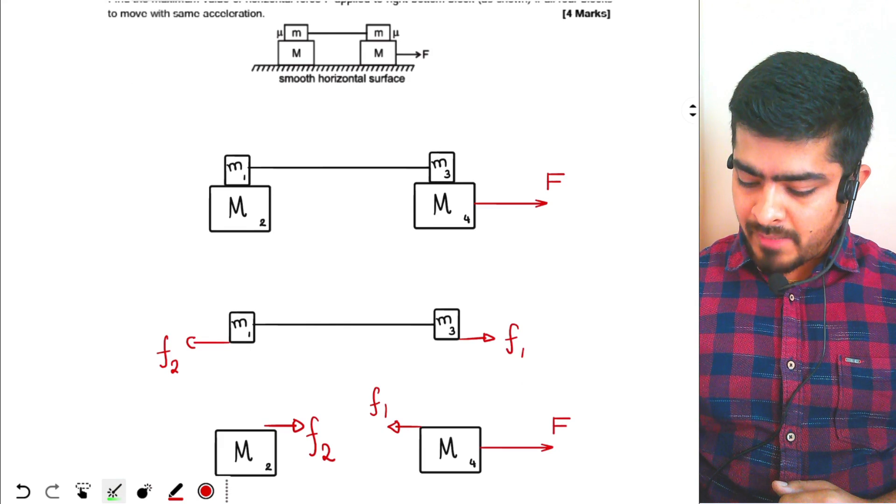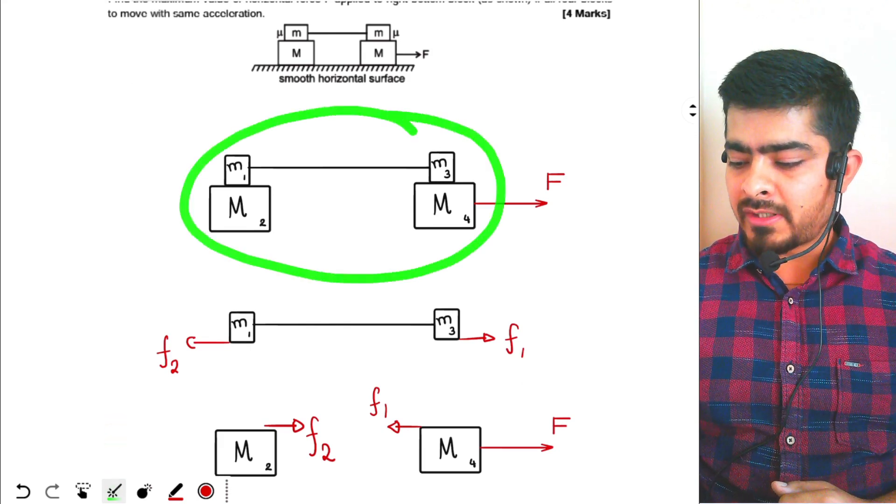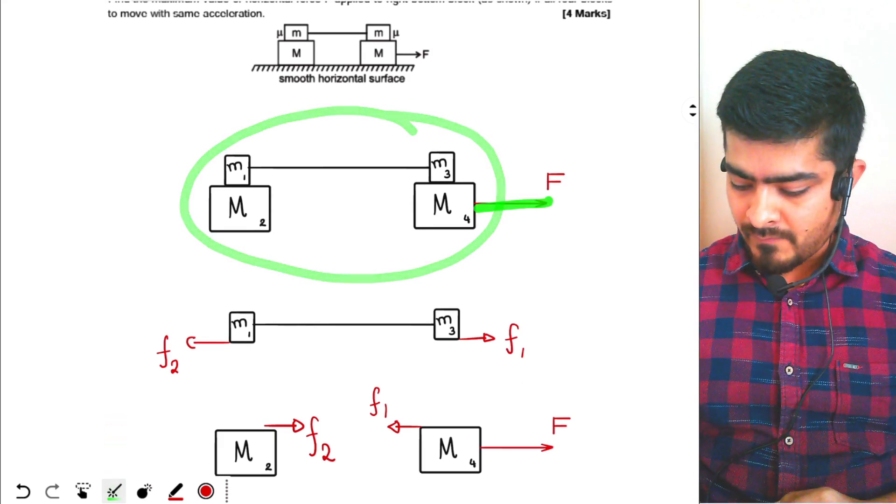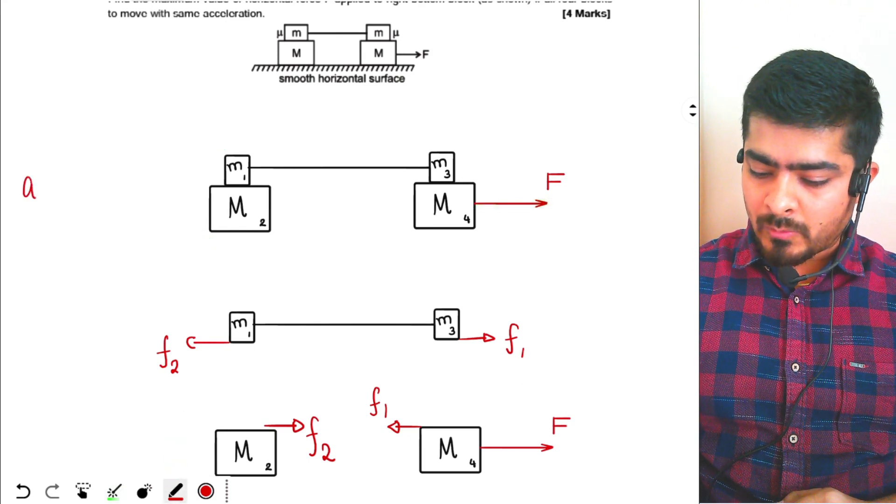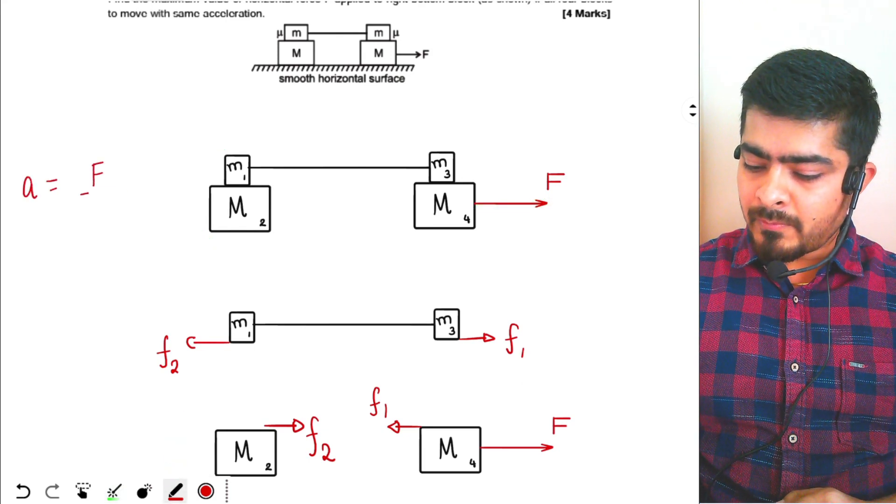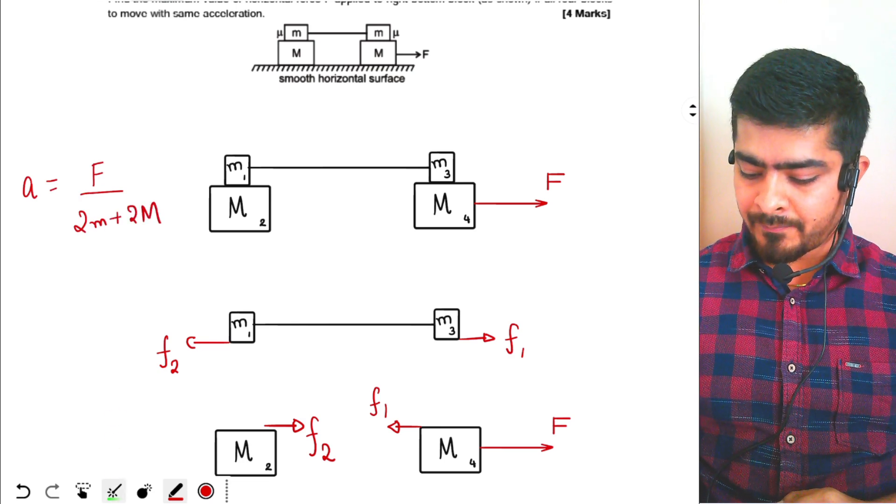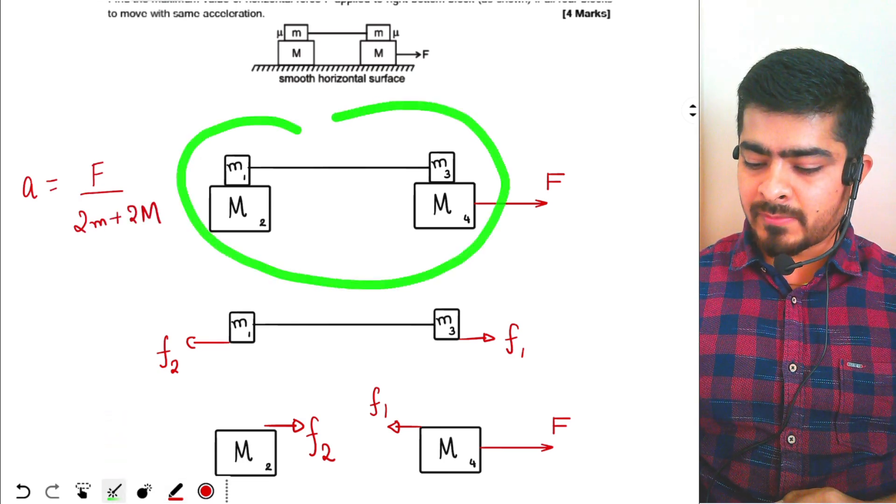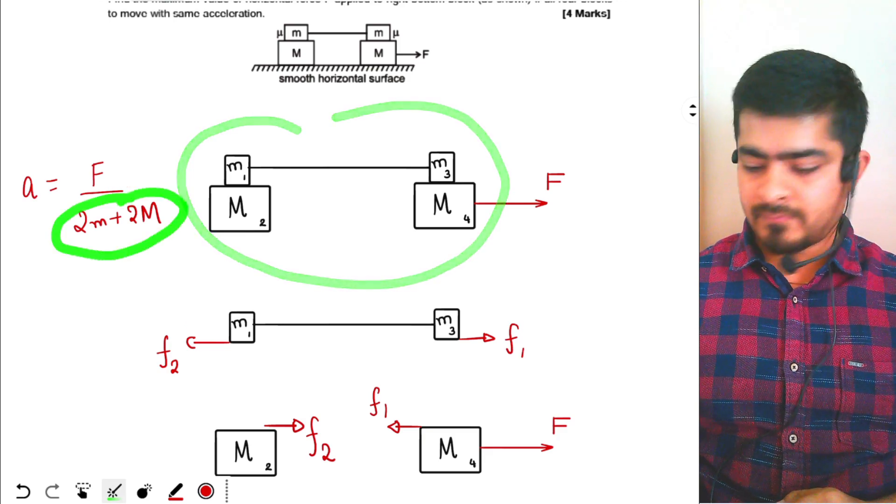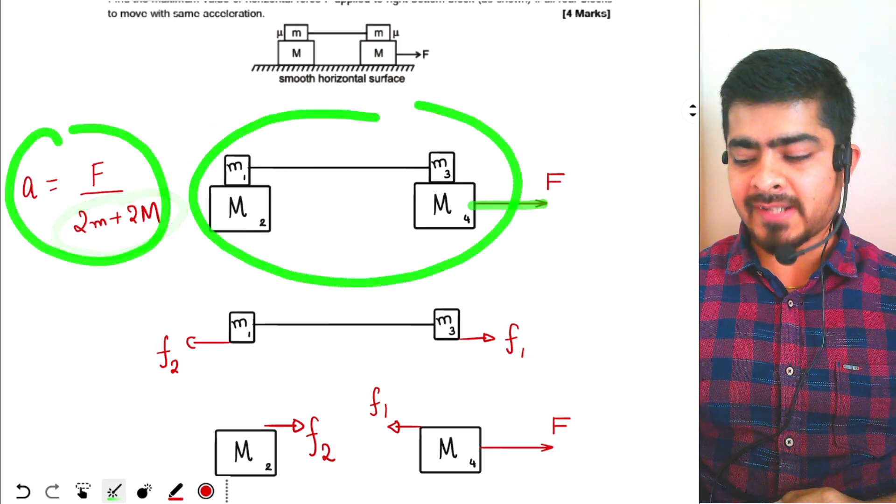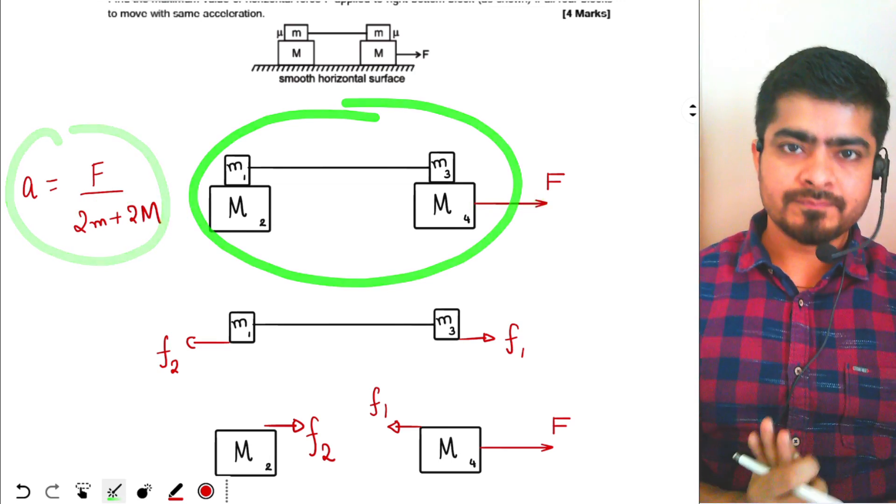Since we are pulling the system with a force F, the acceleration of the system will be how much? F by 2m plus 2 capital M. Total mass of the system is 2m plus 2M and external force is F, so this is the acceleration of the entire system moving together.